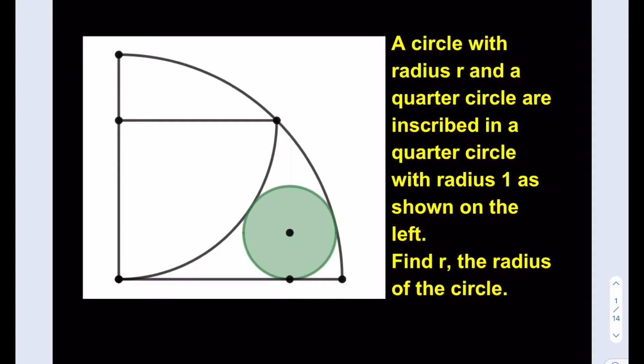Hello everyone, in this video we're going to be solving another great geometry puzzle. A circle with radius r and a quarter circle are inscribed in a quarter circle with radius 1 as shown on the left. Find r, the radius of the circle. Go ahead and pause the video at this point and give this problem a try first.